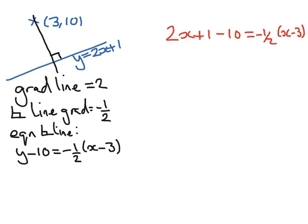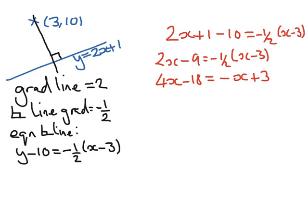Let's tidy this up a bit. That's going to give me 2x minus 9 equals minus a half times x minus 3. I'm going to multiply by 2, so that's going to give me 4x minus 18 equals, and multiplying out the brackets, that'll give me minus x and minus minus 3 is plus 3.